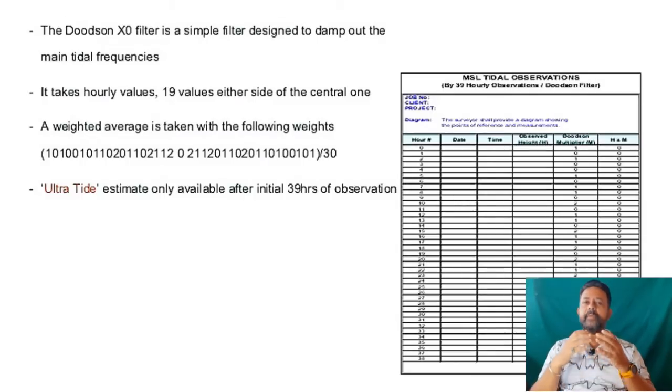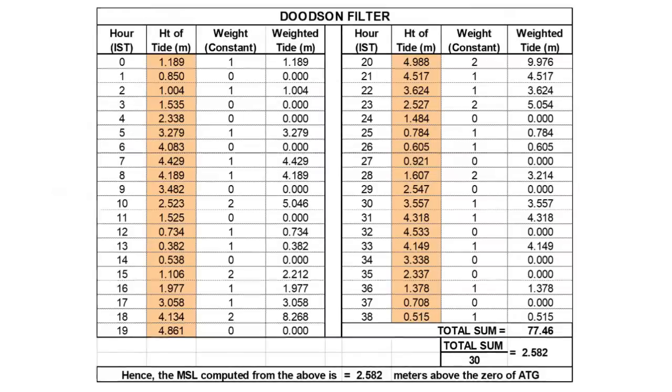So if you have less time and willing to use the MSL as your primary datum for reducing the sounding in your area, then I suggest that you observe 48 hours of hourly tide and calculate multiple 39 hours Dootson filter data and then average all the results. This will give you somewhere about plus-minus 10 cm accuracy.